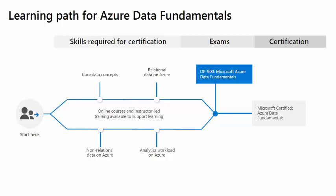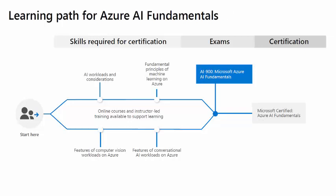AI-900 covers AI Fundamentals and also consists of four major areas. It talks about fundamental principles of machine learning, computer vision workloads in Azure, conversational AI, and different AI workloads and considerations for Azure-specific services.